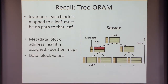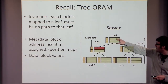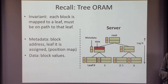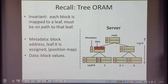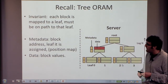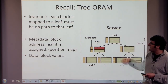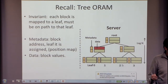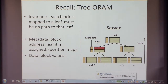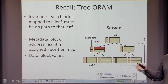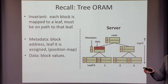The metadata is small — it's the block address, the leaf a block is assigned to, and things along those lines. And also the position map — the whole position map, we can think of as metadata. It doesn't depend on the block size. So how does tree ORAM work? I want to think of it as separating into two types of operations: operations on the metadata (using the position map to find which leaf a block is assigned to, reading addresses of blocks on a path) and operations on the data.